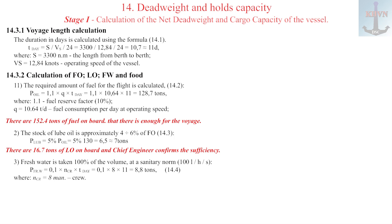3. The supply of fresh water for the needs of the crew for the voyage is taken 100 percent of the volume of fresh water tanks, and the minimum is determined from sanitary standards, 70 to 100 liters per person per day, formula 14.4. We need 8.8 tons of fresh water for 8 persons of crew. According to good marine practice, we bunker with water up to 100 percent. There are 61.8 tons of fresh water on board now.